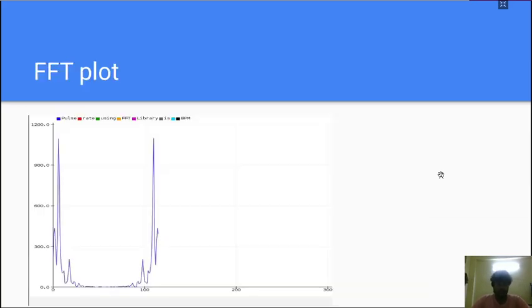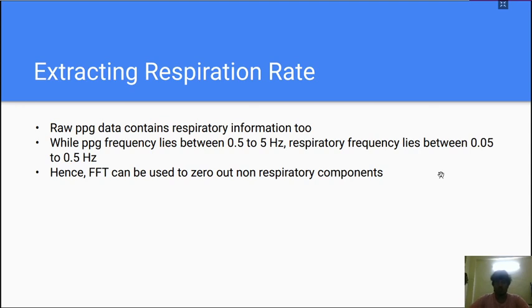And now coming to the next part, what is respiration rate. What we are doing is the PPG data contains respiration information too, while the PPG frequency lies between 0.5 to 5 Hz, the respiration is 0.05 to 0.5. The PPG can be used to zero out the non-respiratory parts.